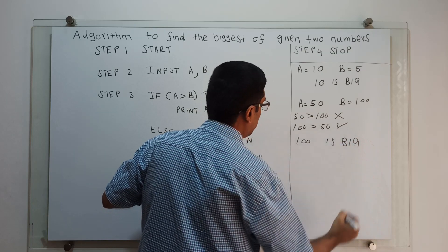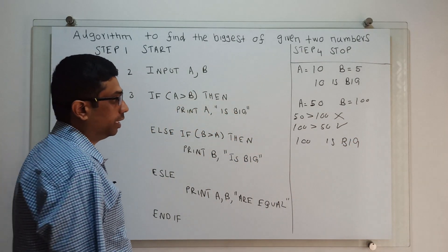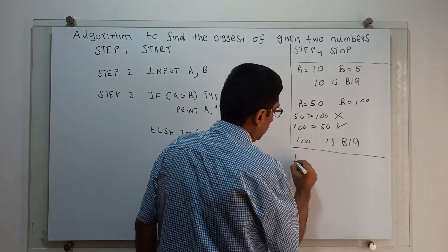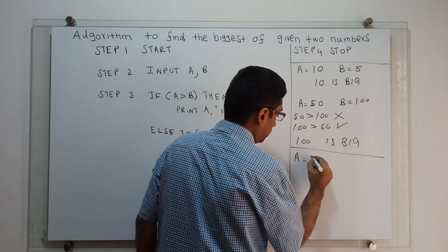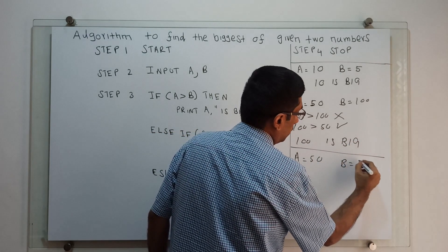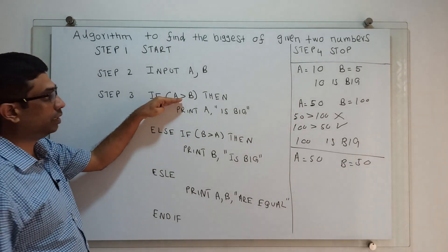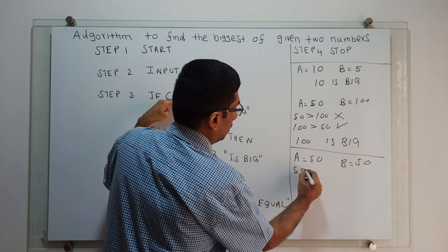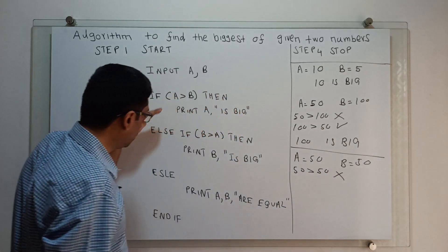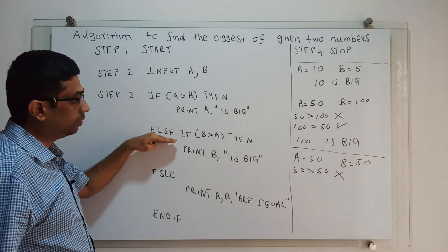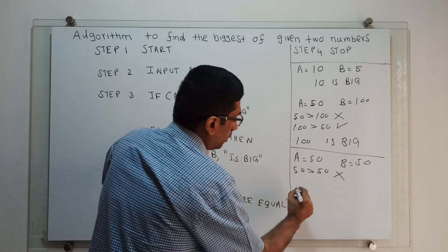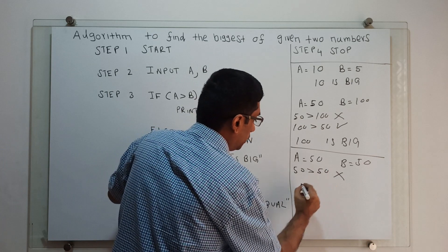Another scenario: I am giving A equal to 50, B equal to 50. A greater than B: we check 50 greater than 50. Condition is false. We come to the else-if statement: B greater than A. So again we check, B is 50